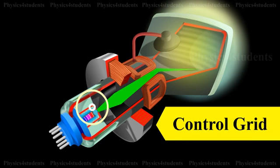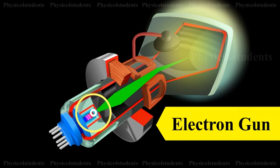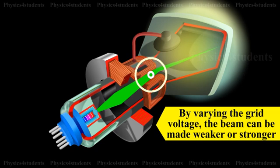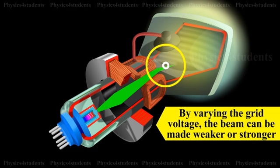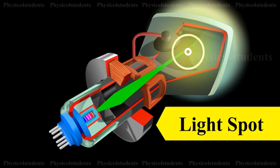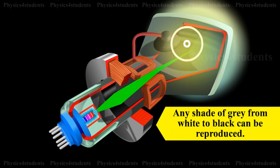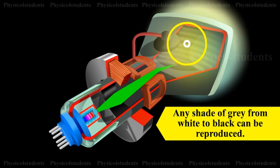The control grid is an element in the electron gun that is negatively biased with respect to the cathode. By varying the grid voltage, the beam can be made weaker or stronger thereby varying the intensity of the light spot produced by the beam when it strikes the phosphor. Any shade of grey from white to black can be reproduced.